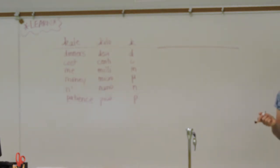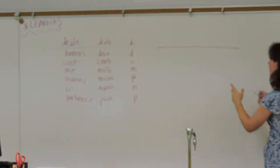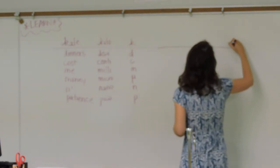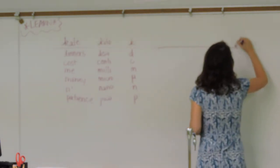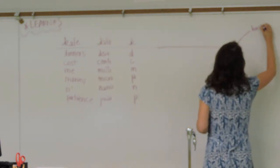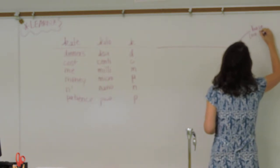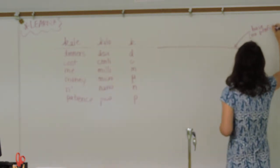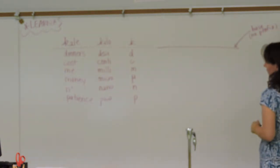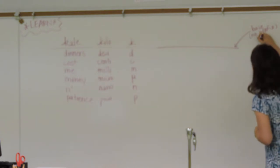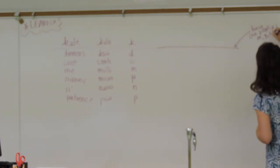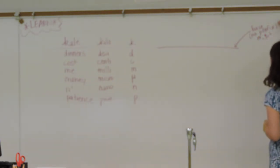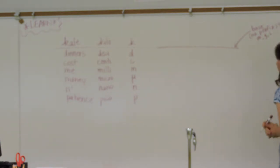Now we deal with the numeric values. The line we drew represents base — where there's no prefix. That's where you have meters, grams, liters, et cetera. The number associated with base is one.